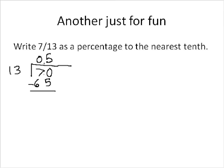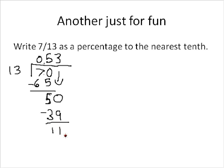Now we do some subtraction here. 70 minus 65 is equal to 5. We have some remainder, so we want to add another 0 there as a placeholder. We bring it down and ask: how many times does 13 go into 50? 13 goes into 50 probably about 3 times. 3 times 13 is 39, and 50 minus 39 gives us 11. Our remainder is less than 13 but greater than 0, so 3 was correct. We'll bring down another 0.